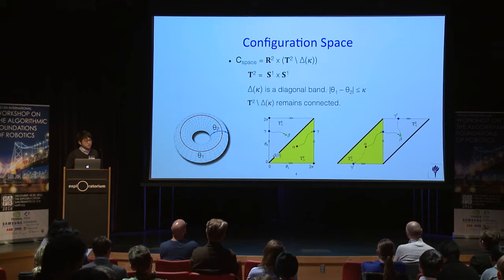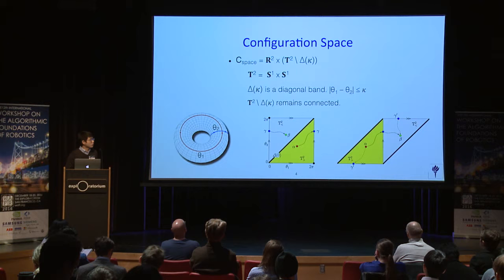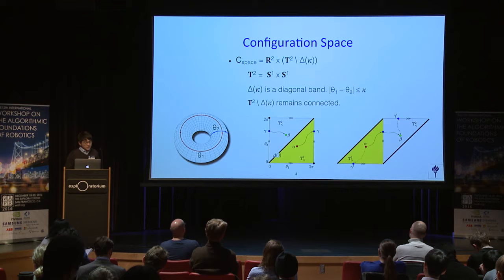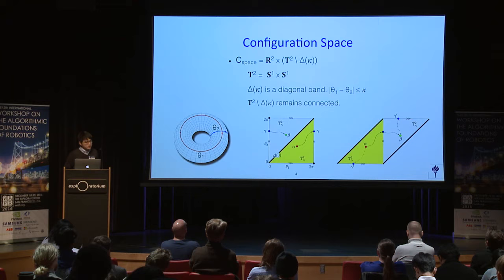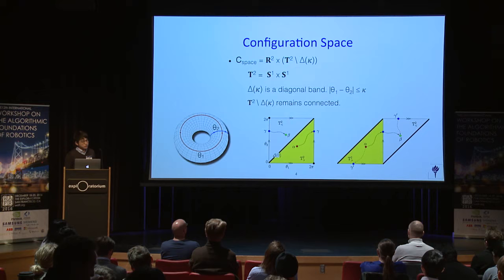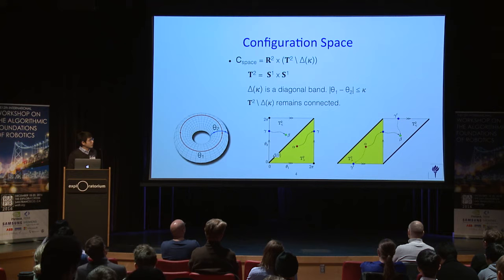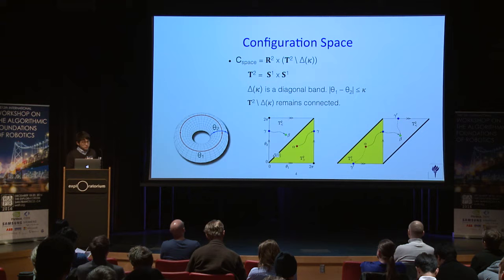The configuration space of the angular component is topologically a torus, and we use a square model to represent this torus. If self-crossing is prohibited, theta one cannot equal theta two. In the torus picture, the forbidden configuration corresponds to the diagonal line, delta of zero. Note that the configuration space is still connected. We can generalize this forbidden diagonal line to a forbidden band around the diagonal to forbid links from coming within certain angles of each other.